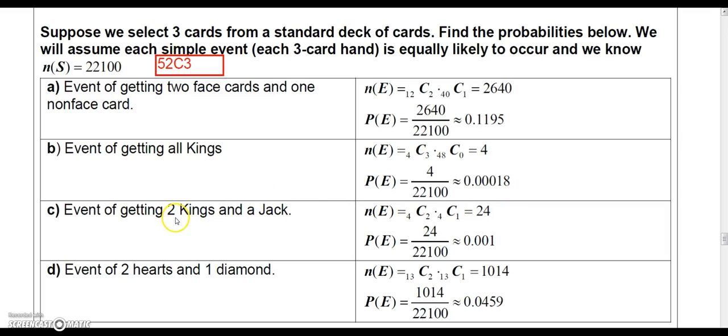And then the event of getting two kings and one jack. Well, then out of the four kings, you would want to choose two. And out of the four jacks, you would want to choose one. And so that's 24 possibilities, which would be 24 out of 22,100 or 0.001.